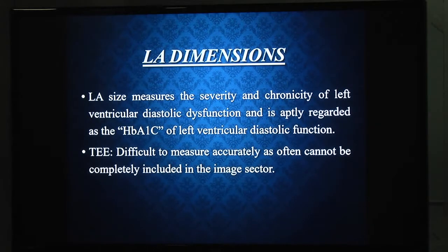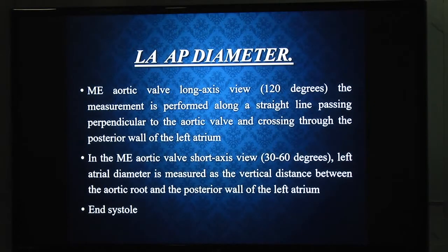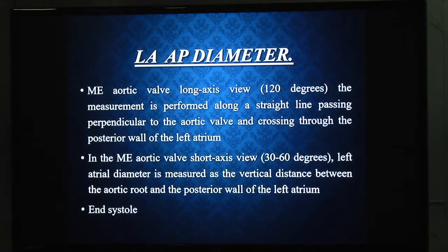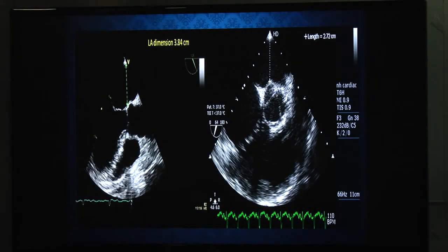In TEE, it is difficult to accurately measure LA size because the image sector does not include the complete LA, as the esophageal probe lies just next to the LA. LA AP diameter is measured in the aortic short axis view as well as the aortic long axis view. In the short axis view at 30–60 degrees, LA diameter is measured as the vertical distance between the aortic root and the posterior wall of the LA. In the long axis view, it is measured from a line perpendicular to the aortic wall to the posterior left atrial wall, measured in end-systole.